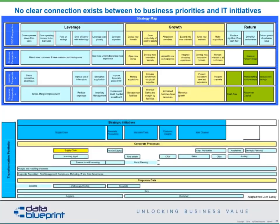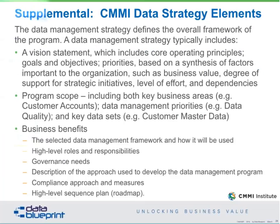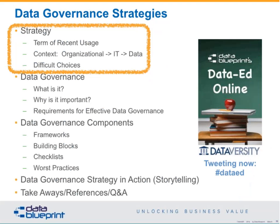My colleague John Ladley put together what he calls the alignment gap. When you look at organizations, he goes through the K-1 filings to see what the strategic objectives are — that's what you tell the Securities and Exchange Commission. Then you look at the IT projects, and it's very hard to match IT projects with the actual achievement of objectives. How is an email system actually going to help the organizational strategy, unless communication is a huge component of what you do? The Capability Maturity Model Institute has also put together some useful resources on this.